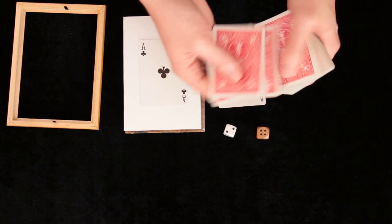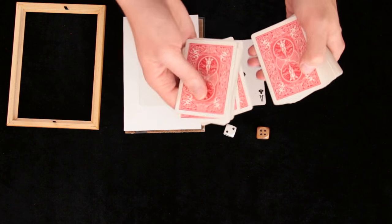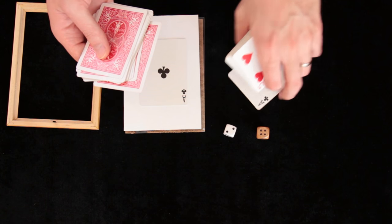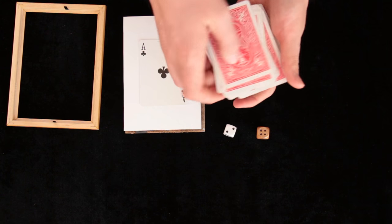I will place my card on 14th position from top. 1, 2, 3, 4, 5, 6, 7, 8, 9, 10, 11, 12, 13 and 14th card will be Ace of Clubs.